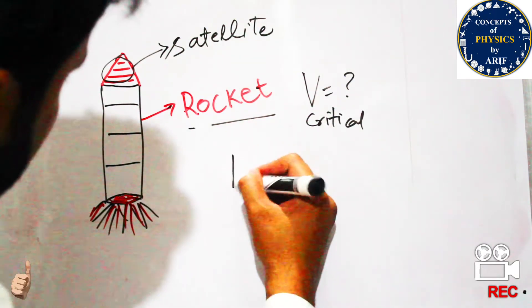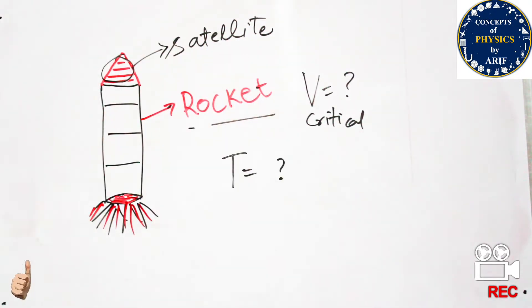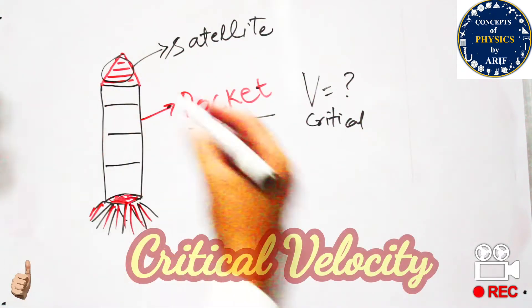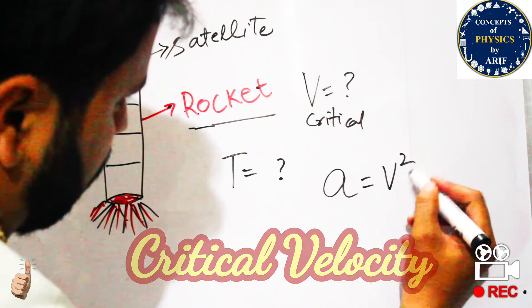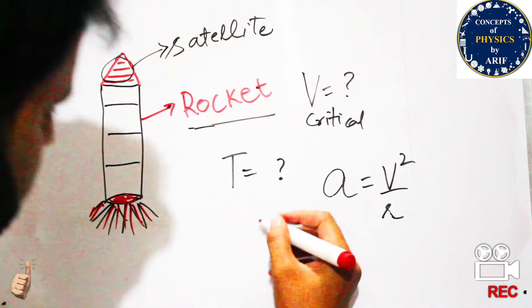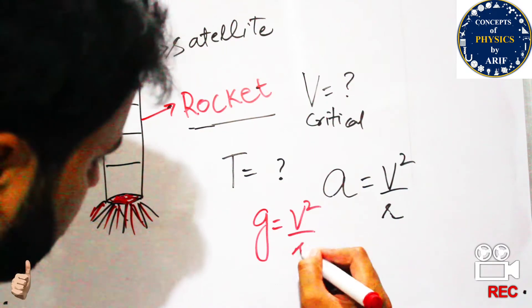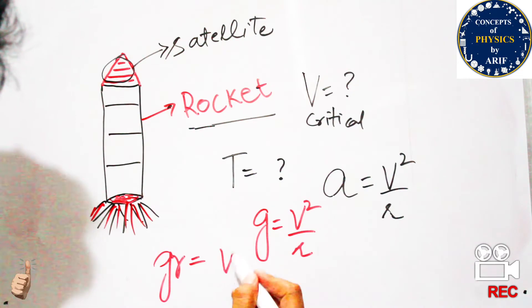We can also find out how much time it takes to reach critical velocity. When a body is released from a rocket going outside, it has some acceleration and gravitational effects acting on it. The acceleration formula is a = v² / r, and since this acceleration is due to gravity, we write a_g = v² / r.